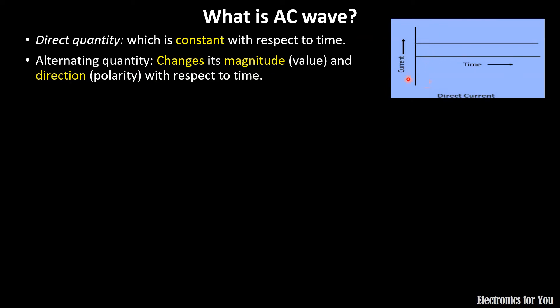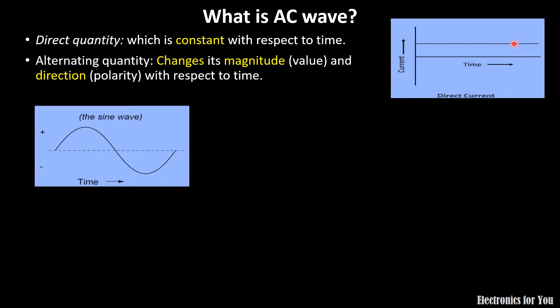Here you can see the diagram of direct quantity and you can see it is constant with respect to time. Whereas, this is an example of alternating quantity which is changing its direction as well as its magnitude with respect to time.